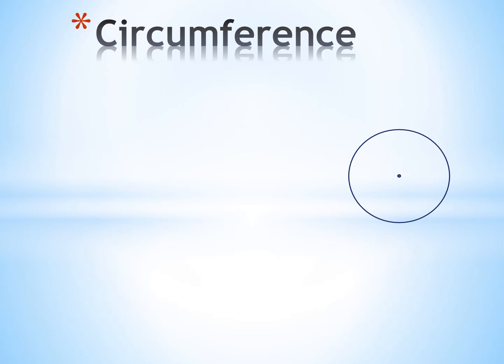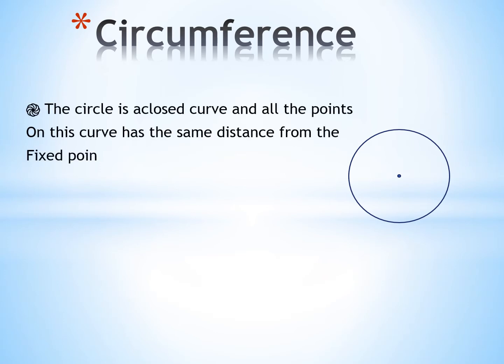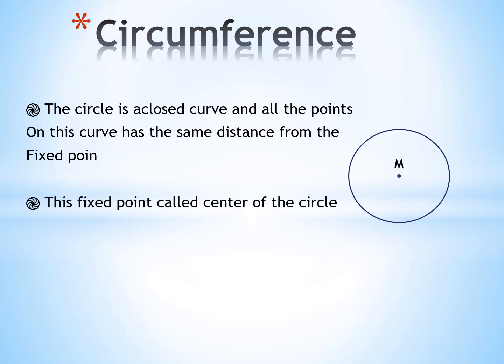Do you remember, Junior 5, what the meaning of a circle is? The circle is a closed curve and all the points on this curve have the same distance from the fixed point. This fixed point is called the center of the circle, and the circle is named by that fixed point.